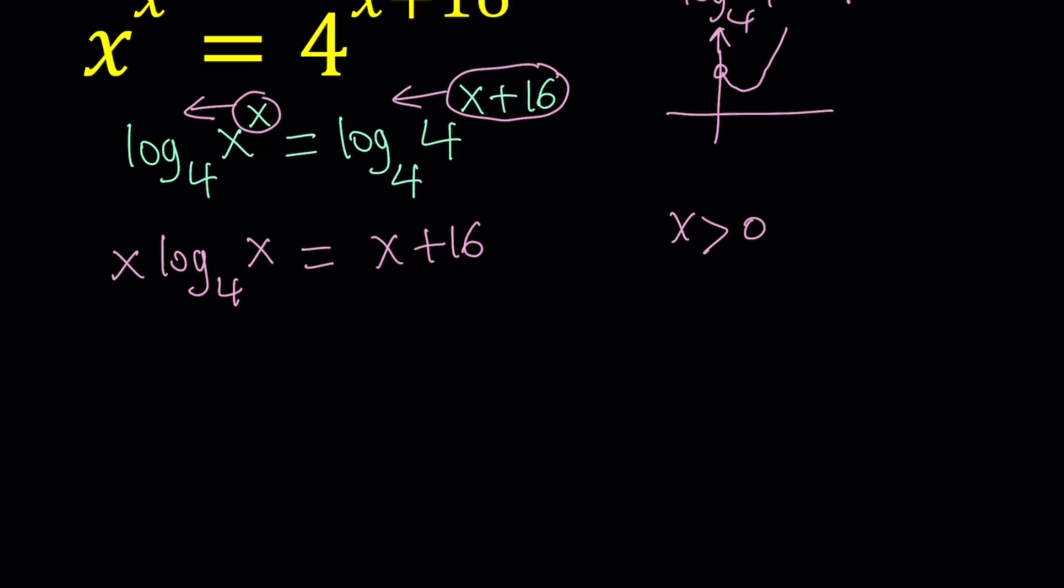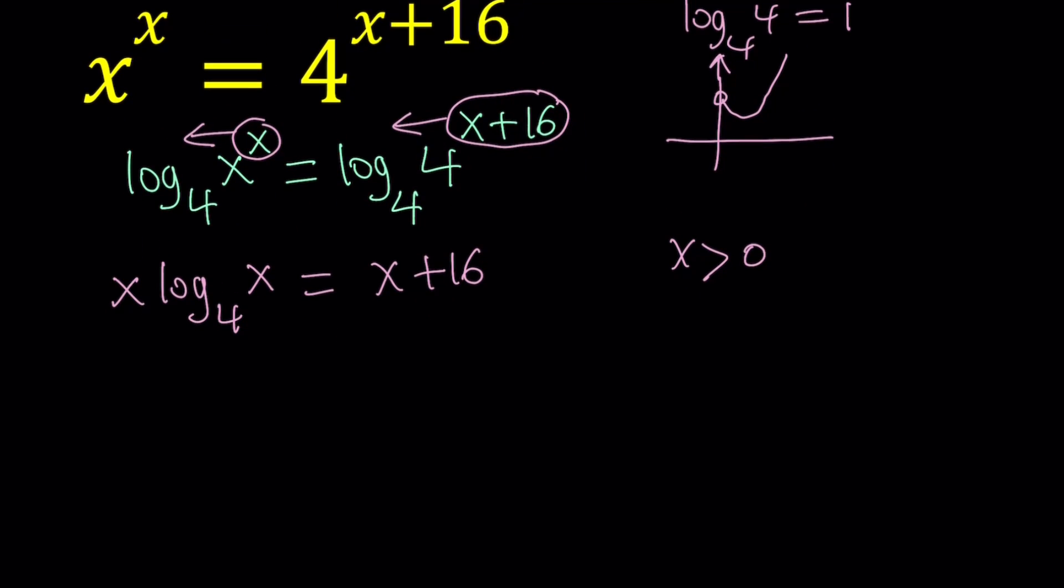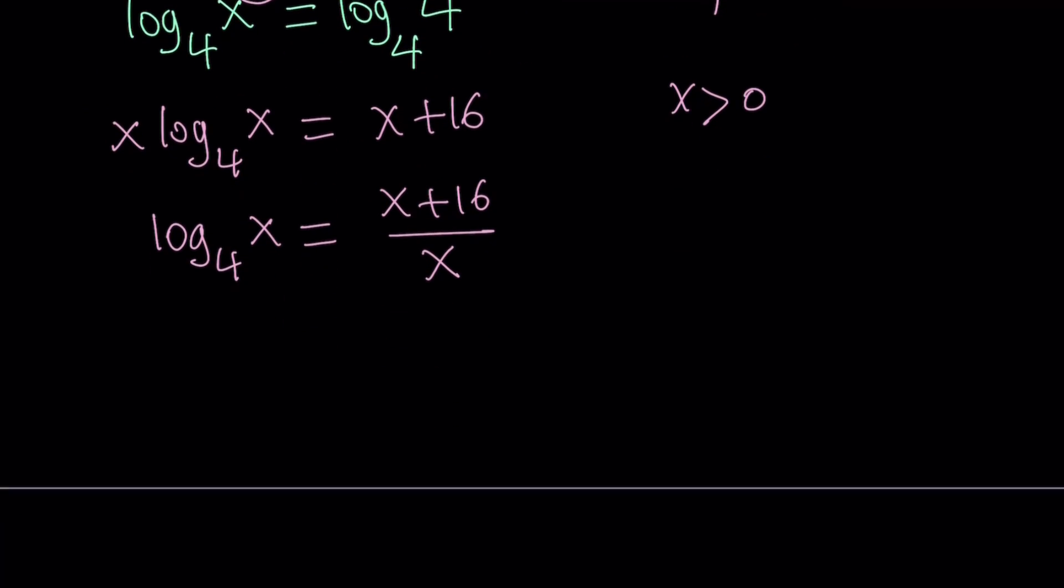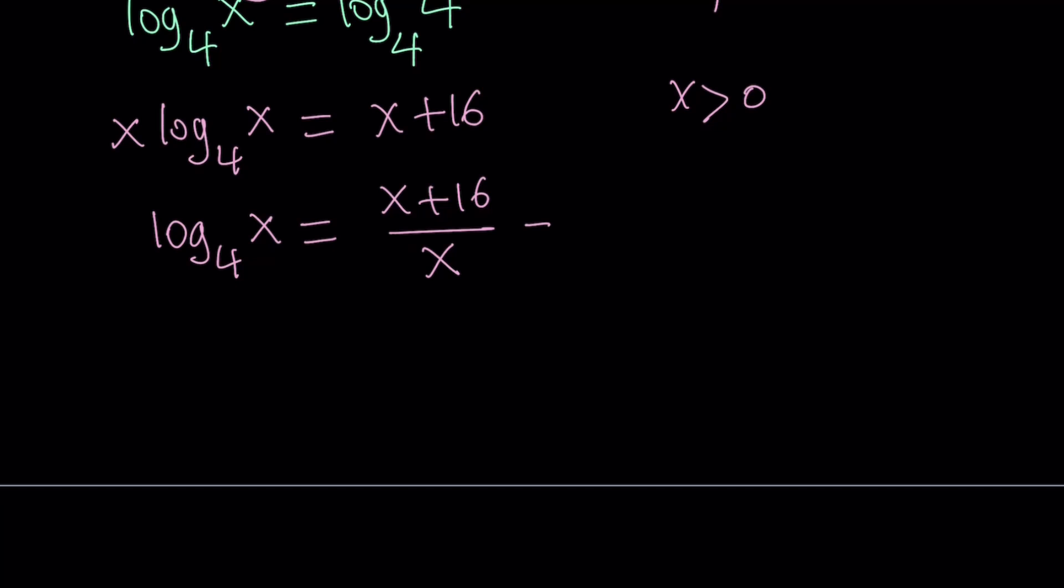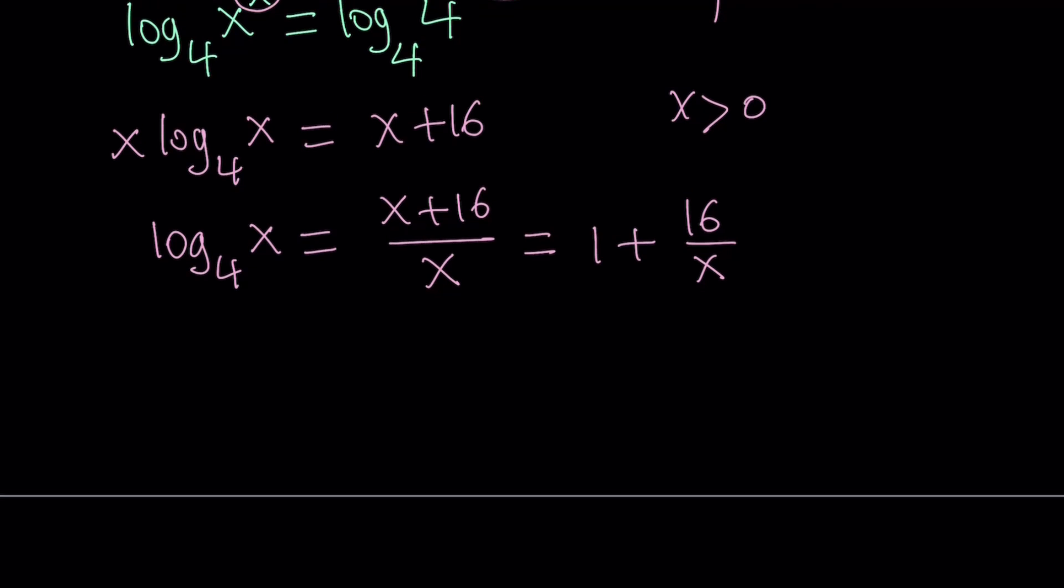After logging both sides, we get this equation, but to make it nicer, I want to isolate the log on the left-hand side and write this as x plus 16 over x equals log x. And now we can separate this and write it as 1 plus 16 over x. We have to make sure that x does not equal 0, but that's never going to happen because x must be greater than 0. So we're good.